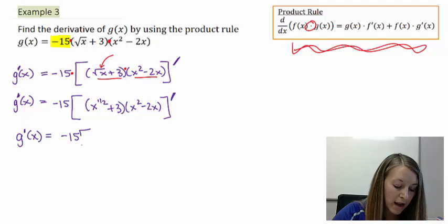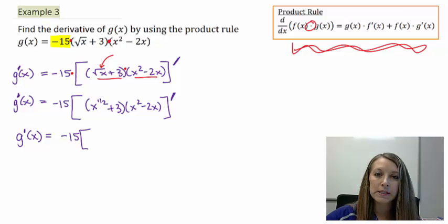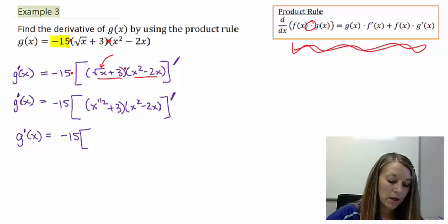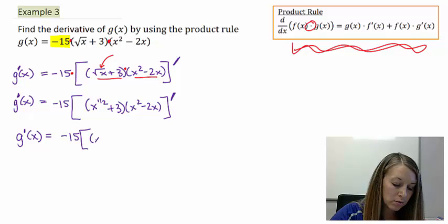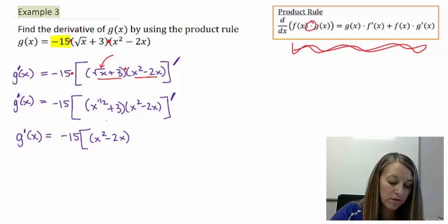Now, typically I write it out, but I'm going to go ahead and try and skip that step here. So it says the original of my second equation, which is x squared minus 2x, times the derivative of my first. So let me go ahead and actually derive it. Power rule, one-half x to the negative one-half power, and the derivative of 3, that's a constant, so that's just zero.